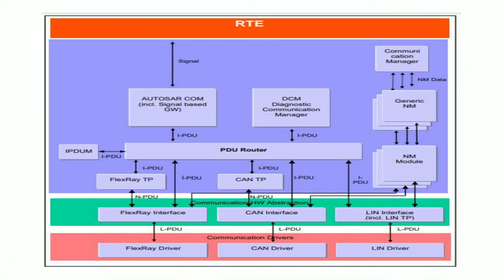Next we will see the AUTOSAR COM and the communication structure. This is how the communication flow happens. The RTE layer is the topmost layer. The signals or data come out of the RTE layer, called system signals. The system signal is essentially a system message — in generic ECU development we call it a message, while in AUTOSAR these are called AUTOSAR signals. Once the signal touches the COM module, the COM module converts the AUTOSAR signal into an IPDU. PDU stands for protocol data unit. We will look into this protocol and its naming conventions in the next section.